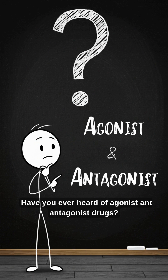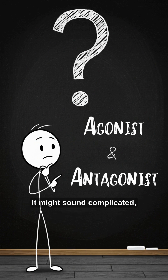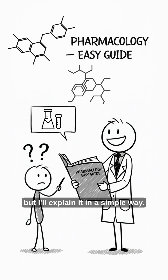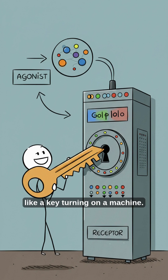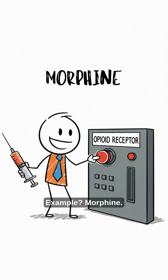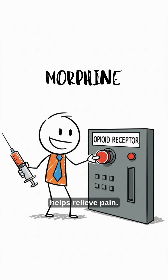Have you ever heard of agonist and antagonist drugs? It might sound complicated, but I'll explain it in a simple way. An agonist drug is one that activates a receptor in our body, like a key turning on a machine. For example, morphine — it's an agonist of opioid receptors and helps relieve pain.